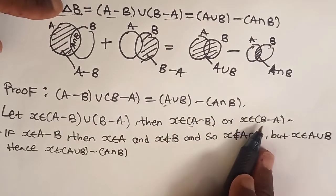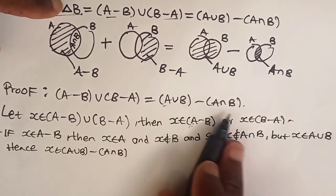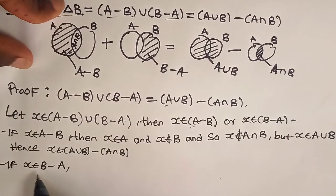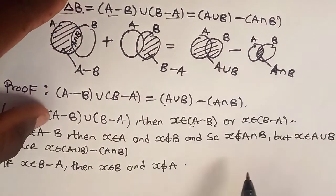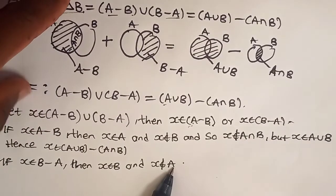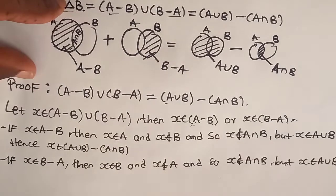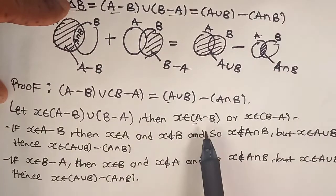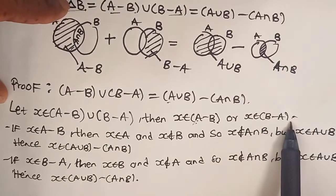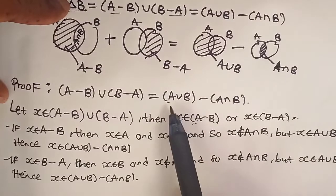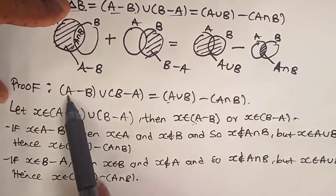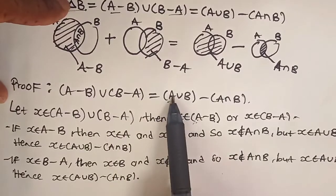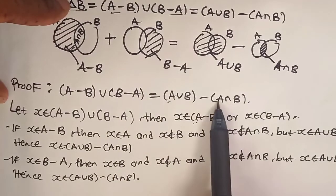What about if x is contained in B-A? X being an element of B-A means that x is in B and x is not in A. So x still won't be in A∩B, since it's not in A. But it will be in the union. Again, x is still an element of (A∪B)-(A∩B). So regardless of x being in A-B or x being in B-A, x is indeed in (A∪B)-(A∩B). This means (A-B)∪(B-A) is a subset of (A∪B)-(A∩B).